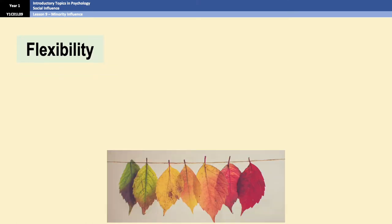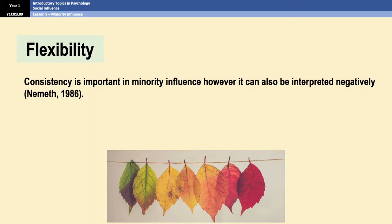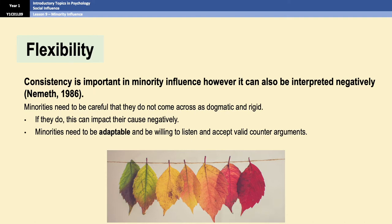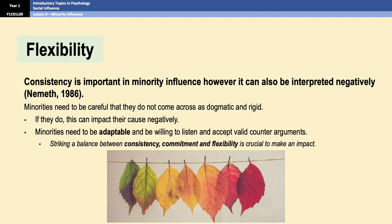Finally, the minority has to be flexible. It's important that they are flexible so that they're not seen as rigid and uncompromising. The minority needs to be adaptable and able to listen to the viewpoints of others, because not doing so would shed them in a negative light and would ultimately harm their cause. I'm sure everybody has been in a conversation or argument with somebody who will not back down no matter what — even if you're providing really good counter-arguments, they just don't listen. When that happens, it makes people just not want to engage. So the key is always to strike a nice balance between consistency, commitment, and flexibility in order to make a big impact.